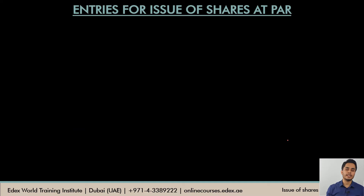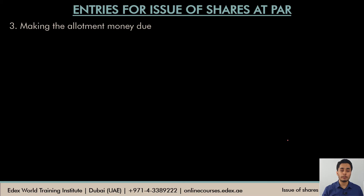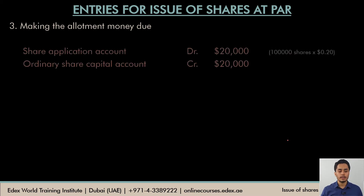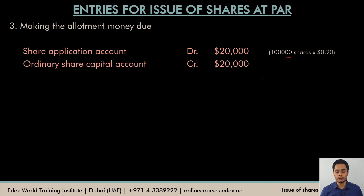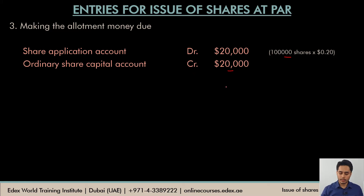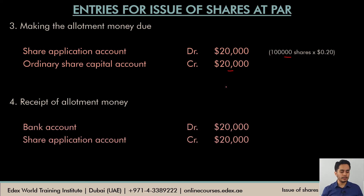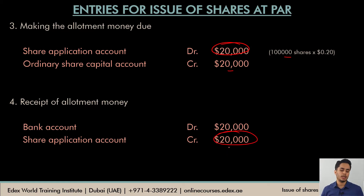Going to the third entry — once the company has allotted shares, it will ask shareholders to pay the allotment money. The company makes allotment money due: the share application account is opened and debited with $20,000 (100,000 shares × $0.2), and the ordinary share capital account is credited with $20,000. When shareholders pay the allotment money, the bank account is debited and the share application account that was opened for $20,000 is closed by crediting it with $20,000.